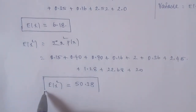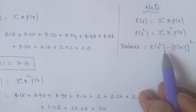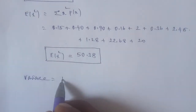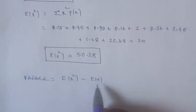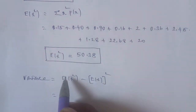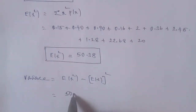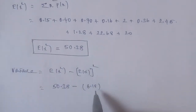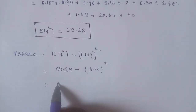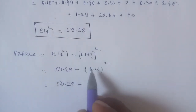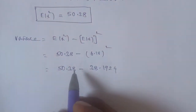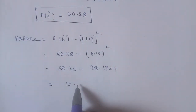Now applying the variance formula: Variance = E(x²) − [E(x)]². E(x²) = 50.38 and E(x) = 6.18. So Variance = 50.38 − (6.18)² = 50.38 − 38.1924 = 12.1876. This is the final variance answer. Thank you, students.